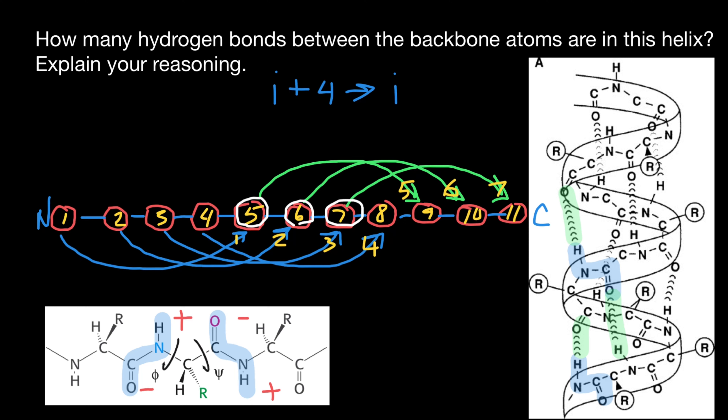Another common mistake is to note that we have 11 amino acids — giving 10 peptide bonds — and then multiply by two to get 20 hydrogen bonds. This is also wrong. The answer is not 20, not 14, but seven.